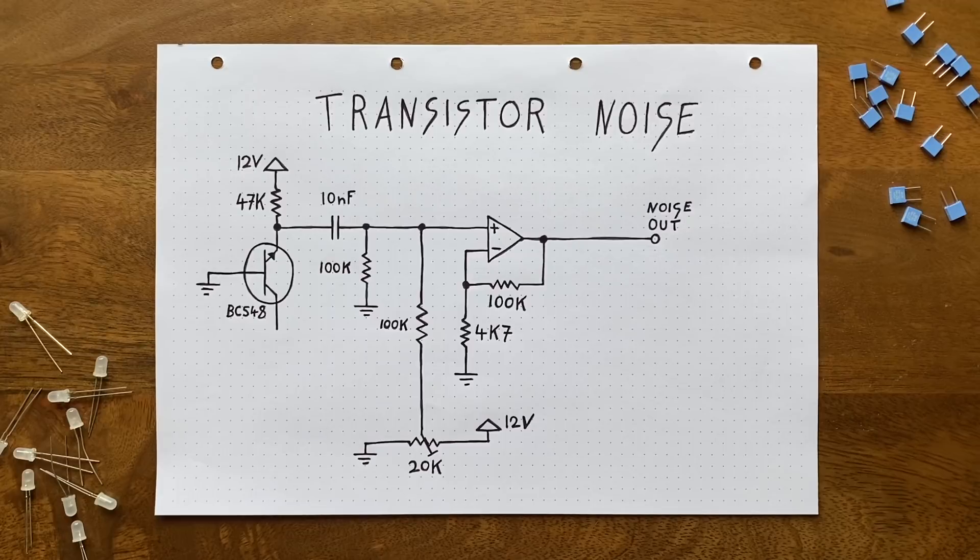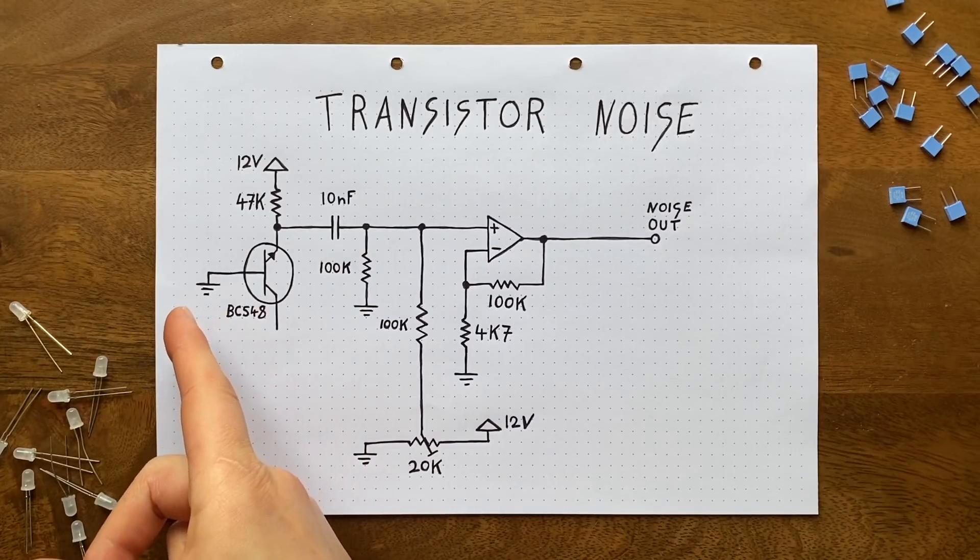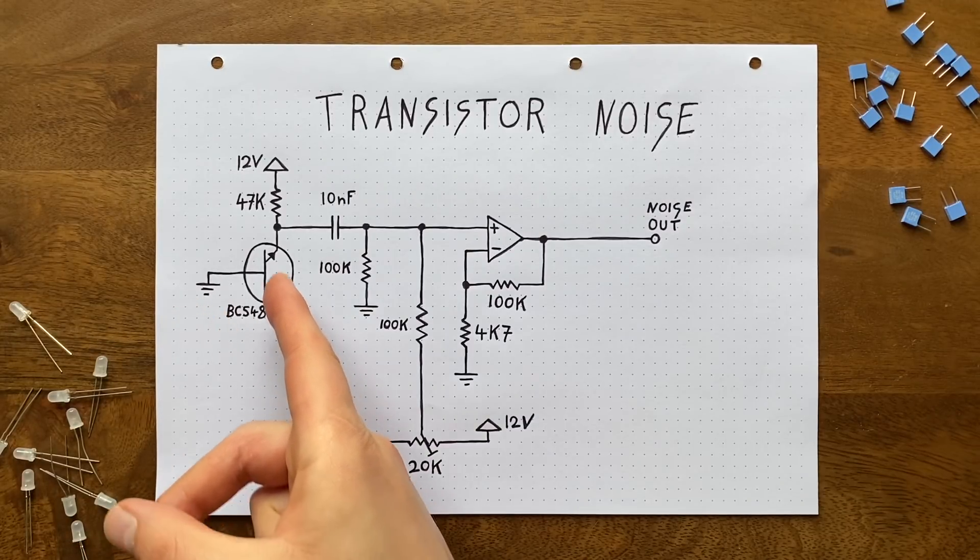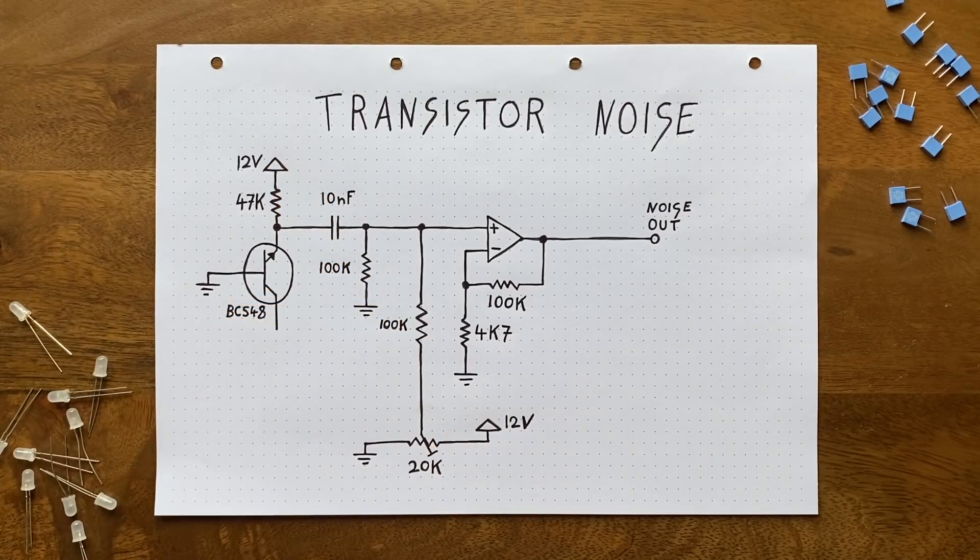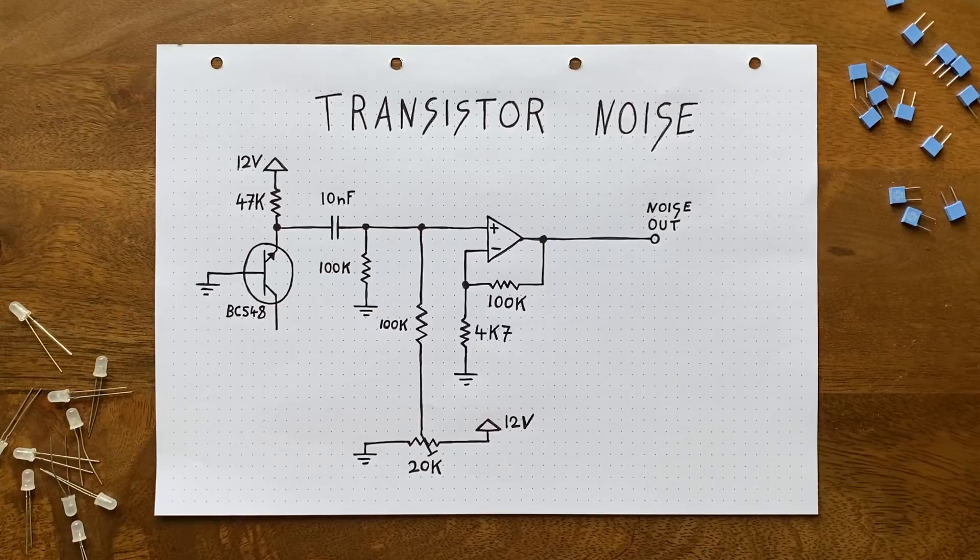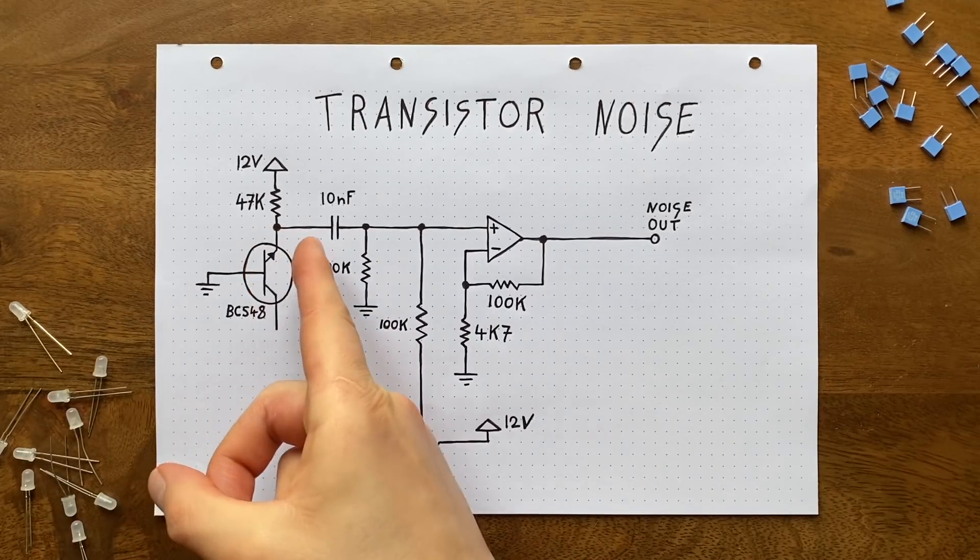It's quite simple. We ground the base, leave the collector dangling, and then blast the emitter with 12 volts through a decently sized resistor. Since this is really backwards compared to the way it's supposed to be used, the transistor won't enjoy it and will start to complain. The sound of that complaining can then be picked up from the emitter.